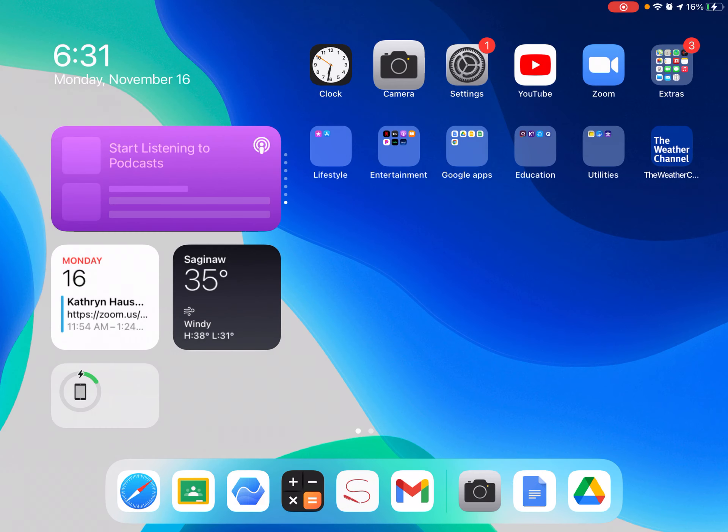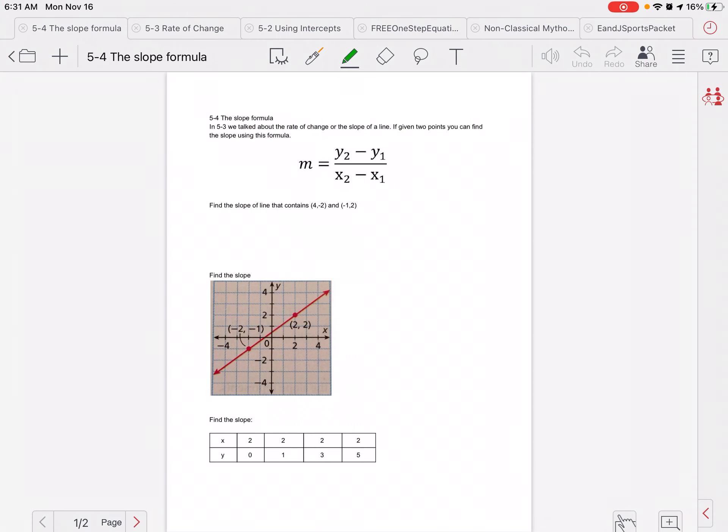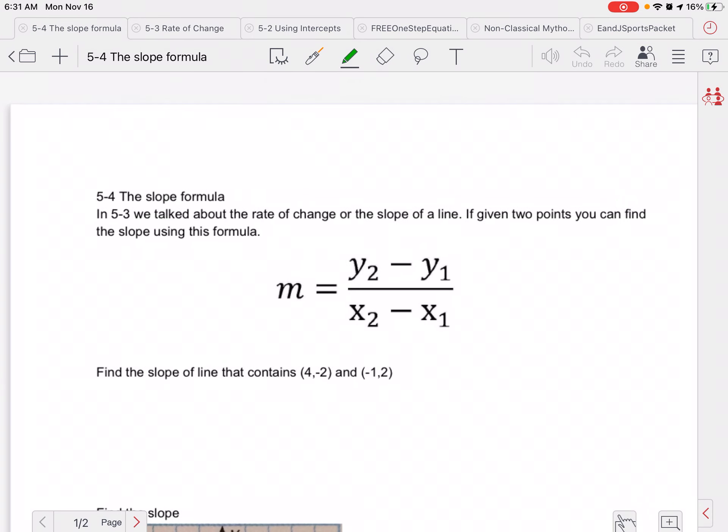Hi guys, welcome back. We are going to start talking about slope today. Now we talked about last week, or last section, rate of change. Rate of change we can find by the change in y over the change in x. So we have the slope formula. Whenever we have two points, we take the two y values and subtract them, and that goes over the subtraction of the two x values.